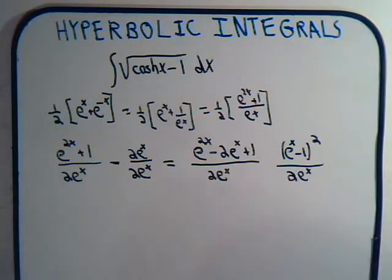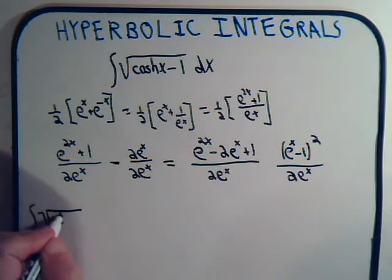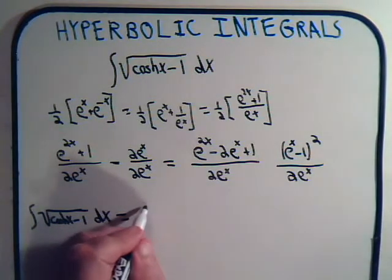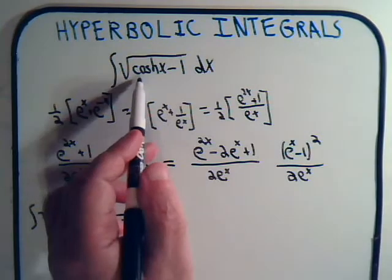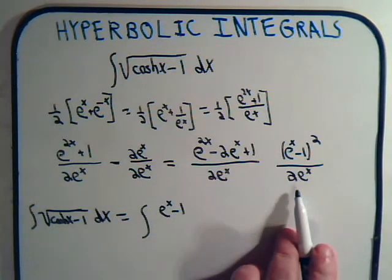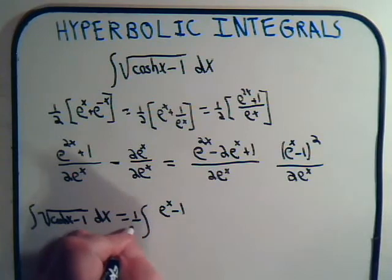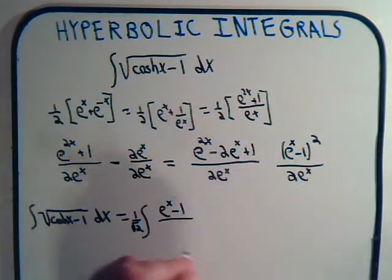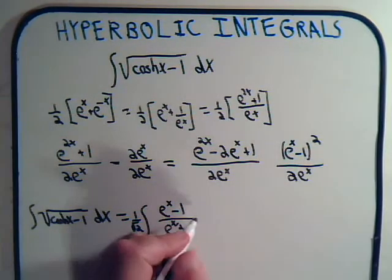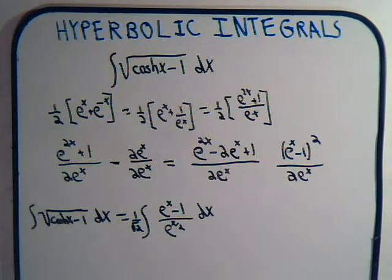So it looks like we are going to have the integral of the square root of the hyperbolic cosine of x minus 1 dx. That will equal this integral: inside the square root sign we have e to the x minus 1, we take the square root of 2 to the outside, and this gives e to the x over 2. It looks like the best thing to do is split this into two integrals, dividing by e to the x over 2.